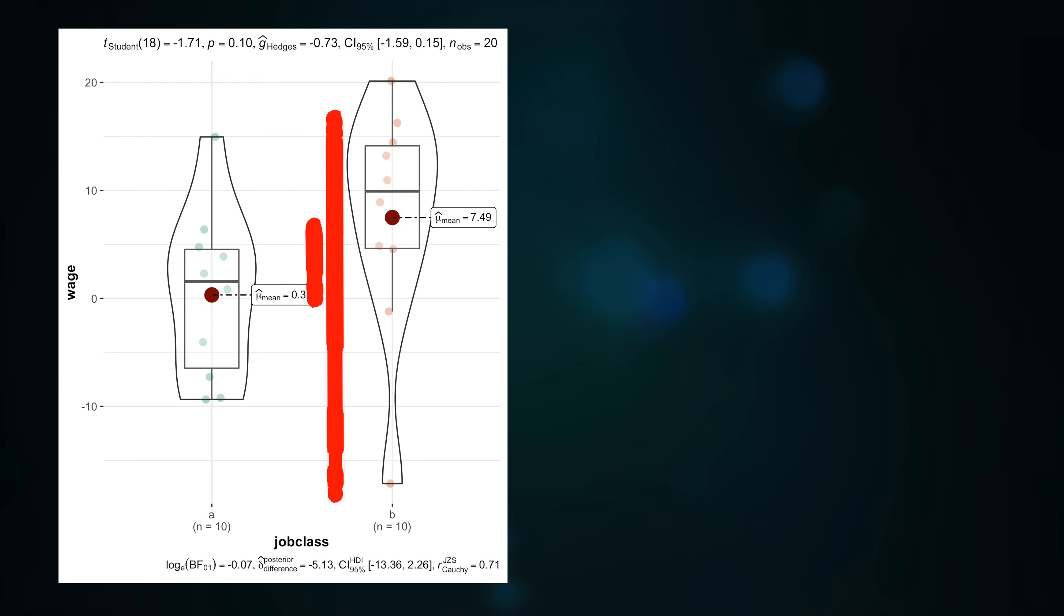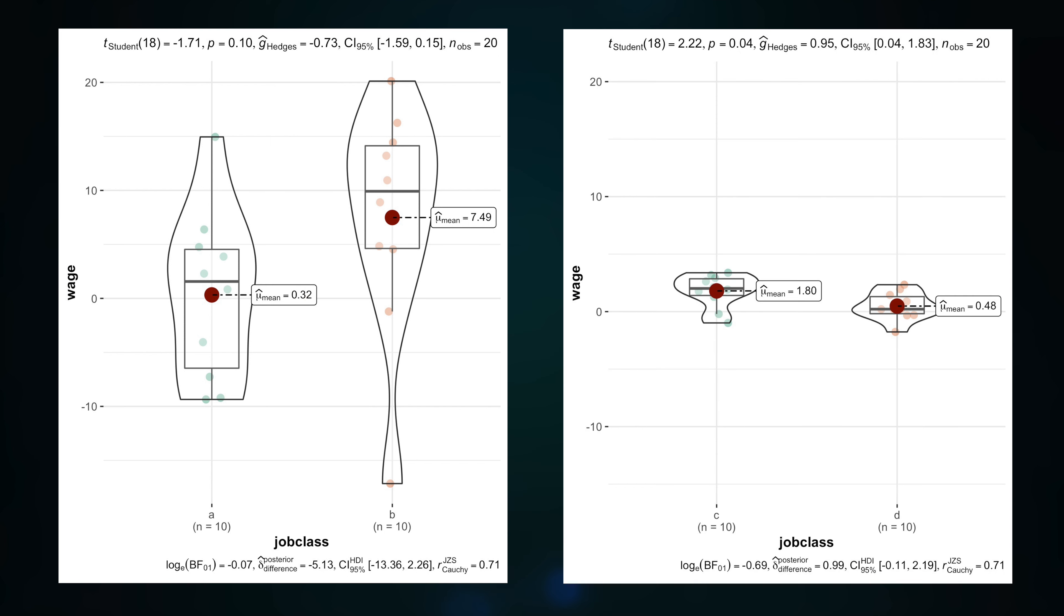And here is why. Even very different means with huge variances may not be significantly different, while even very similar means with small variances can be significantly different.